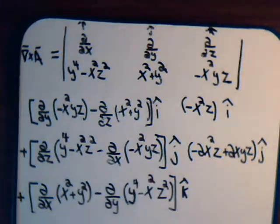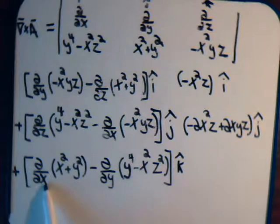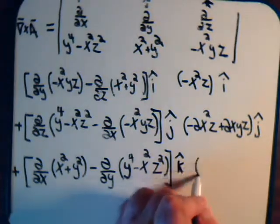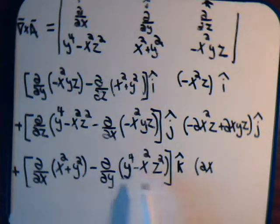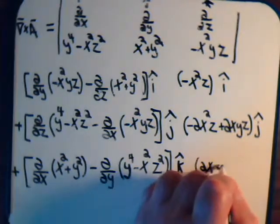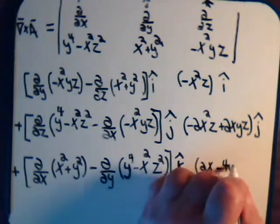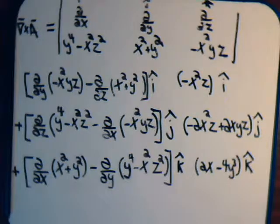For the k-th component: taking the partial of the expression with respect to x gives 2x. Then taking the partial of the other expression with respect to y gives 0, but there's a minus sign, so it becomes −4y³. That is the k-th component of the curl.